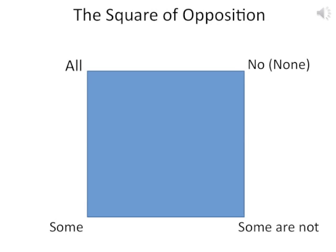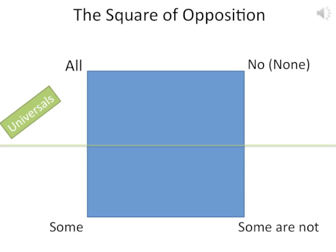Let's look at the first separation in the square of opposition. This line divides the square of opposition into an upper half and a lower half, indicating the difference between what are known as universal quantities and particular quantities.